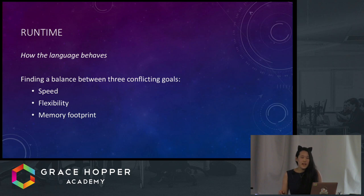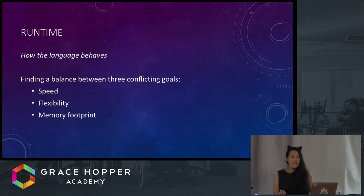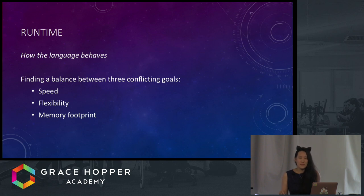Finally, we have runtime, which is how the language is represented in memory — in other words, what it does. This is all about finding a balance between three conflicting goals: speed (how efficiently does it run?), flexibility (the more a user can modify the language within itself, the more powerful it is), and memory footprint, which you always want to be as small as possible.